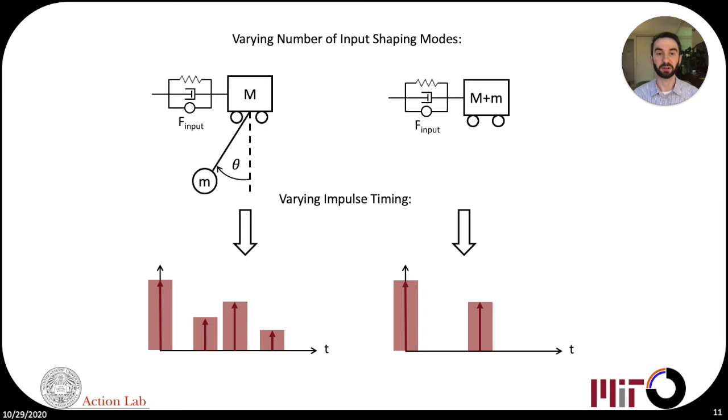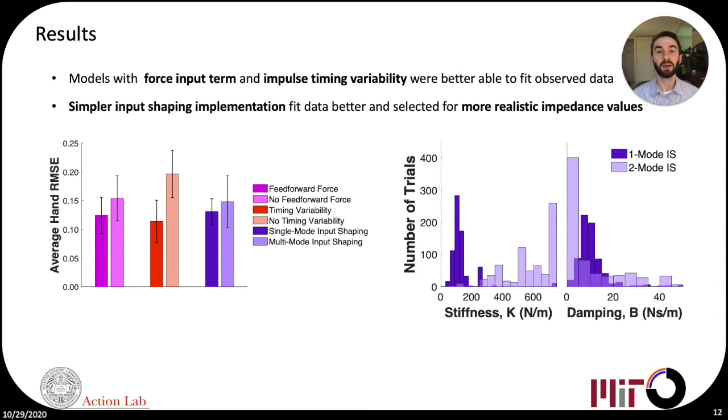Finally, we allowed impulse timing to vary in some models, representing human error in formulating or executing the ideal input shaping plan. Best-fit stiffness, damping, and timing variability values were computed by a non-linear optimization that minimized root mean square error between simulated and observed hand kinematic variables.